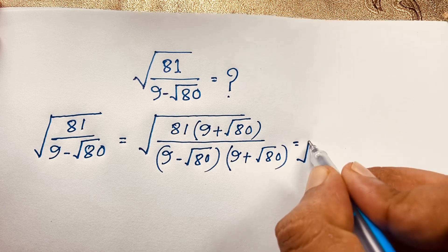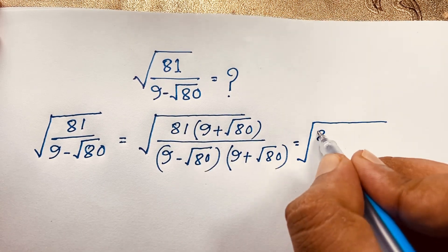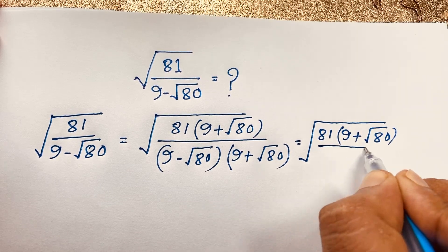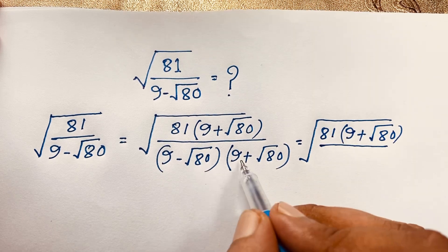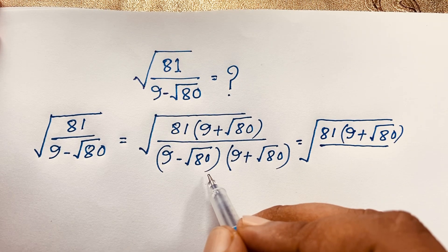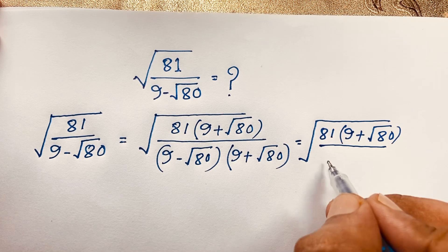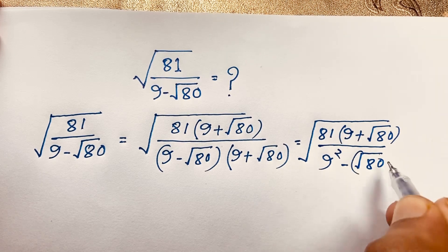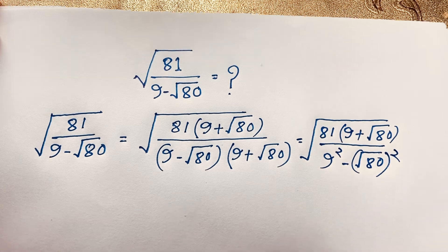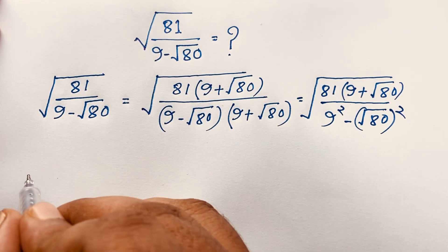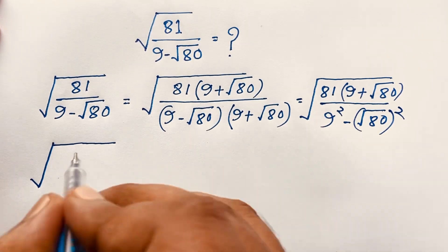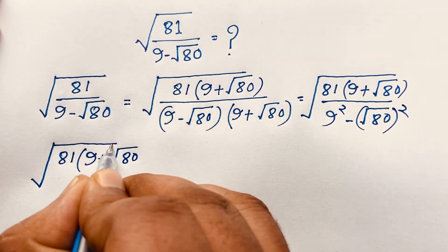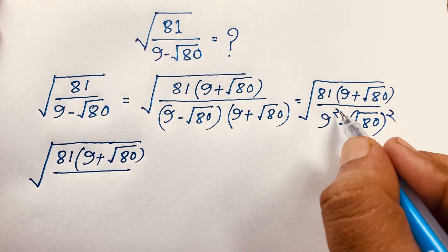Now in the numerator we have square root of 81 times (9 plus square root 80). In the denominator, if we think of this as (a minus b)(a plus b), according to the identity it equals a squared minus b squared. So the denominator becomes 9 squared minus (square root 80) whole squared. Since 9 squared is 81, that gives us 81 minus 80.